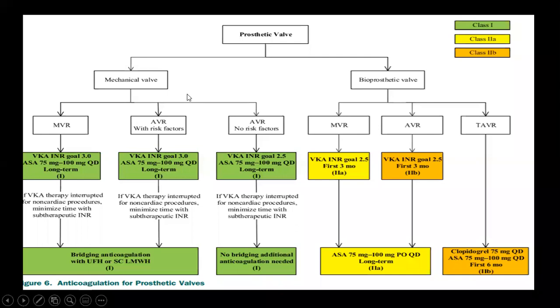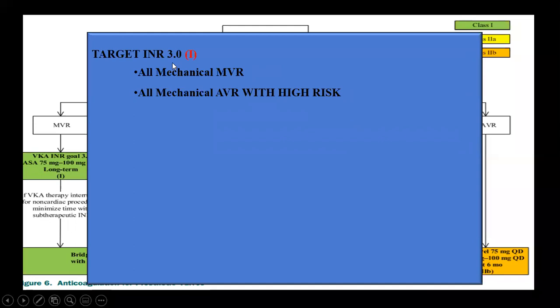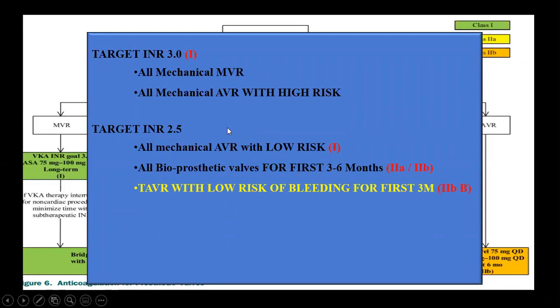Target INR of 2.5 is for all patients with mechanical aortic valve replacement with low-risk factors (absence of the above risk factors), and for all patients with bioprosthetic valves for the first three to six months. A new recommendation from the focused update: all patients who have undergone TAVI with low bleeding risk should receive acetyl-salicylic acid plus warfarin for the first three months to prevent asymptomatic valve thrombosis, with a target INR of 1.5 to 2. For an On-X valve in the aortic position with no risk factors, INR can be maintained at 1.5 to 2.0.